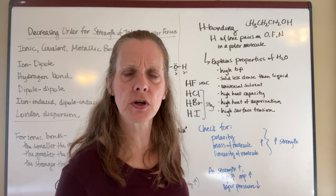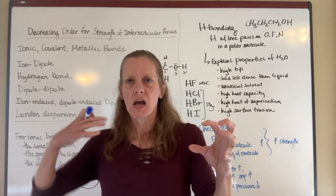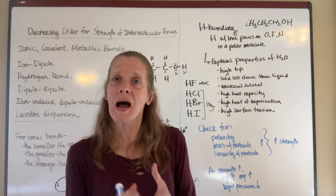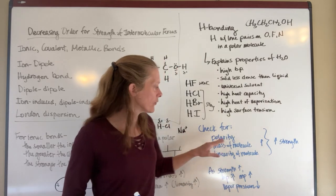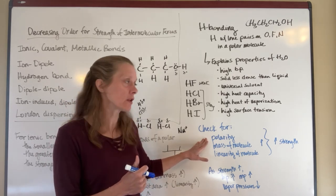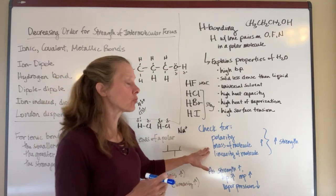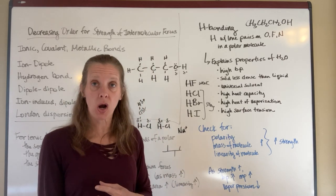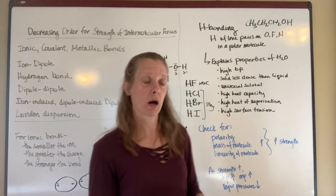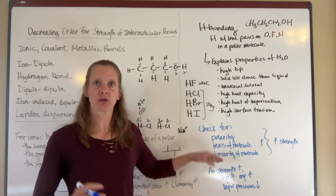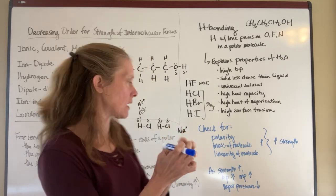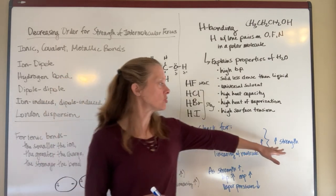When homework asks you to compare two substances for higher melting point, boiling point, or vapor pressure, there are three things to look for: first, polarity — the greater the electronegativity difference, the more polar the molecule and the stronger the intermolecular forces. Second, mass — the greater the mass, the more electrons there are, and the greater the chance that electron clouds can distort and form dipoles. Third, linearity — the more linear the molecule, the easier it is for molecules to get close to each other and have stronger attractions, leading to higher boiling and melting points.